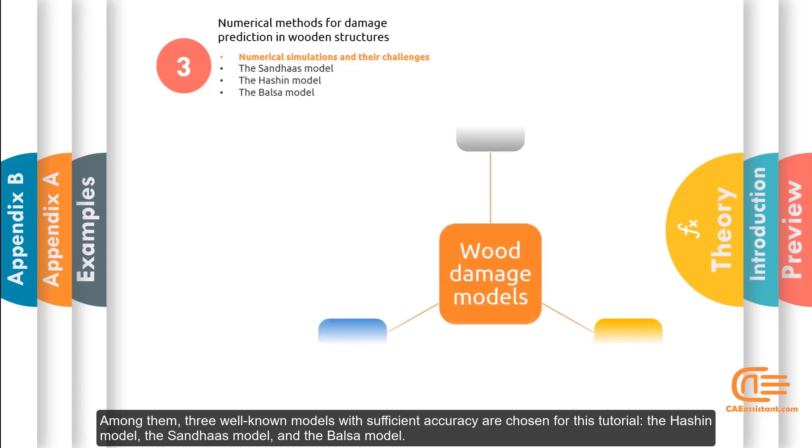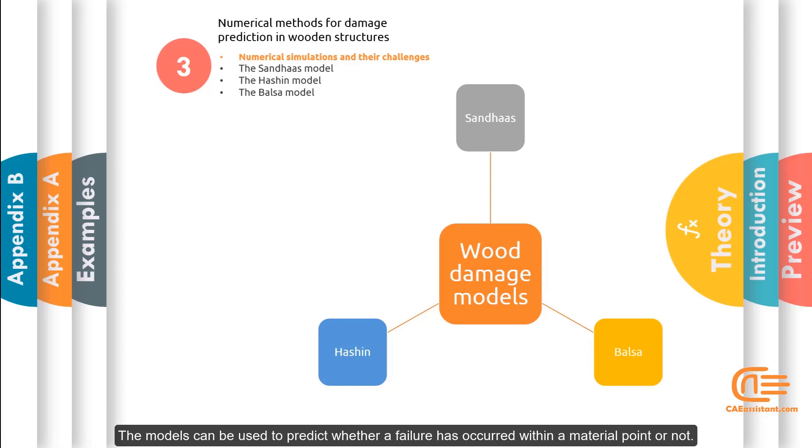Among them, three well-known models with sufficient accuracy are chosen for this tutorial: the Hashin model, the Sandhaus model, and the Balsa model. The models can be used to predict whether a failure has occurred within a material point or not.